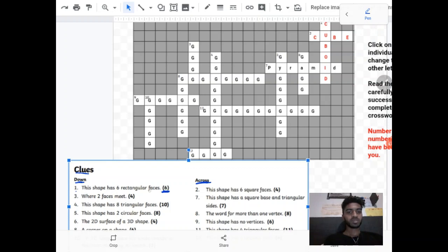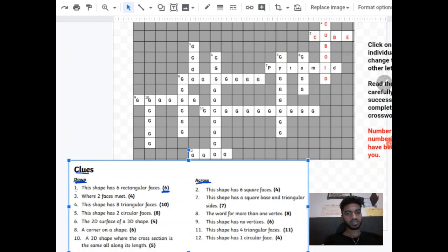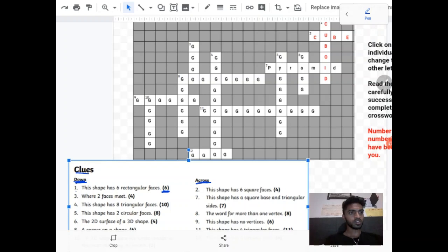So what shape has six rectangular faces? The answer is cuboid. So it goes down because it's on the down side. Look at number one which is over here, then you go down and it goes down six for cuboid. C-U-B-O-I-D.